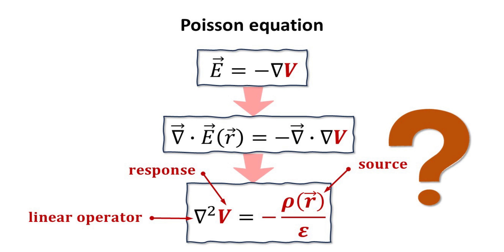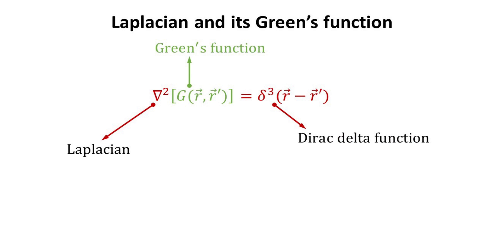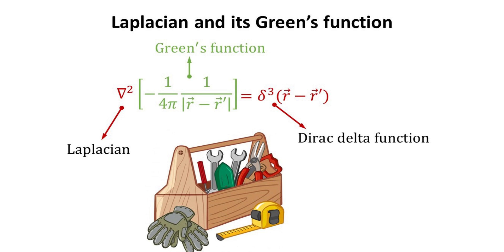Thus, we can arrive at the expression for the electric potential V if we know the Green's function of the linear operator, which in this case is just the Laplacian. By definition, the Green's function for the Laplacian is such that when operated upon it yields the Dirac delta function. For the 3D Laplacian operator, the Green's function is well-known and is given by 1 over the modulus of R minus R prime with a factor of 4π.